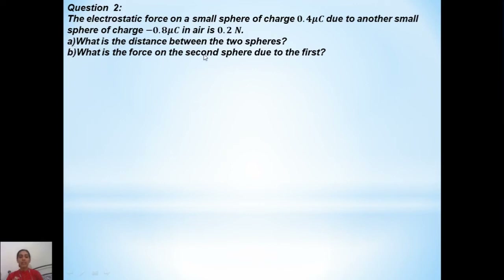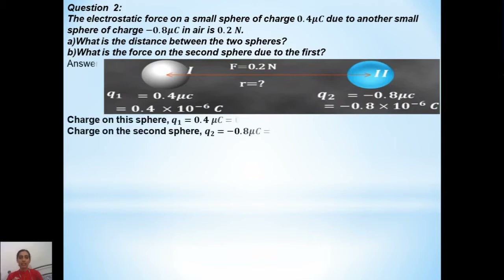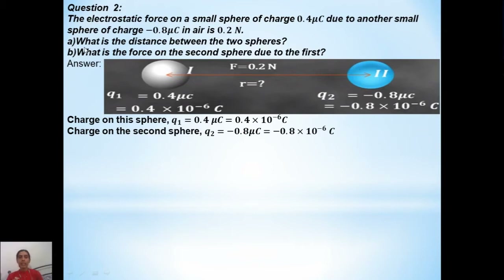The second part asks: what is the force on the second sphere due to the first? So we have two things to find. For the first question, we assume the distance between these two spheres is r, and we should find out what r is. So r will be equal to question mark.